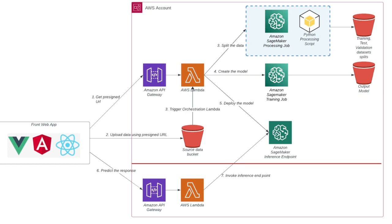Once the model is live and available as a model deployed on the inference endpoint, we need to invoke that model to get the predicted response. You can see the bottom half of the diagram uses the front-end web application to make a request to the inference endpoint and then get the predicted response, which we will show on the UI. Let's look at these steps in more detail using code snippets, the AWS console, and further architecture diagrams.